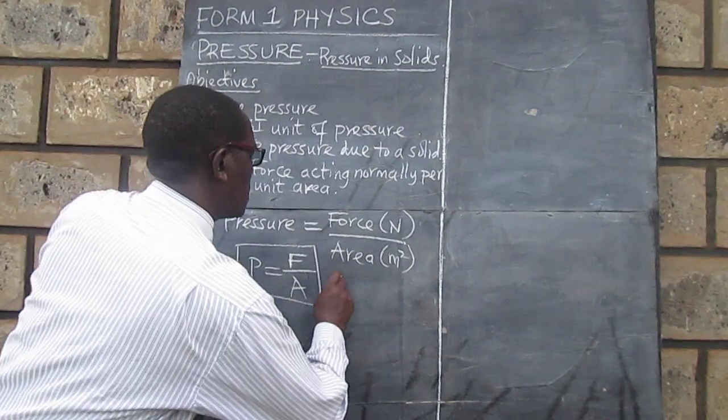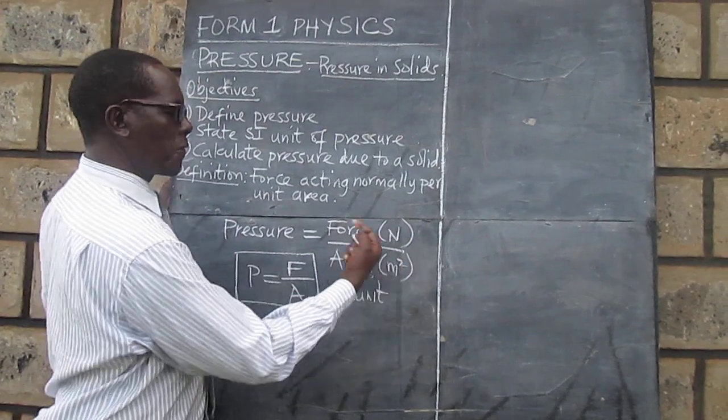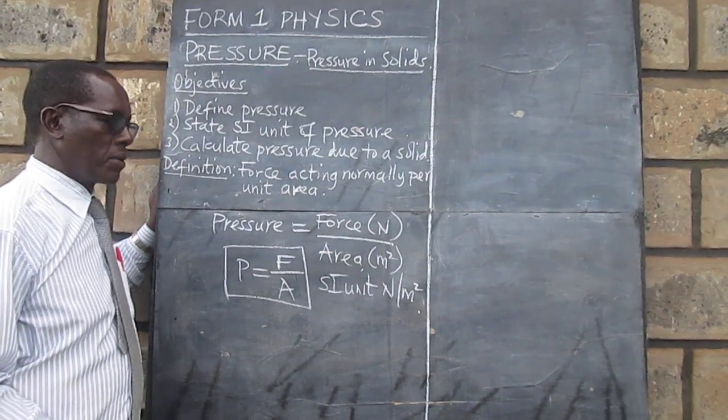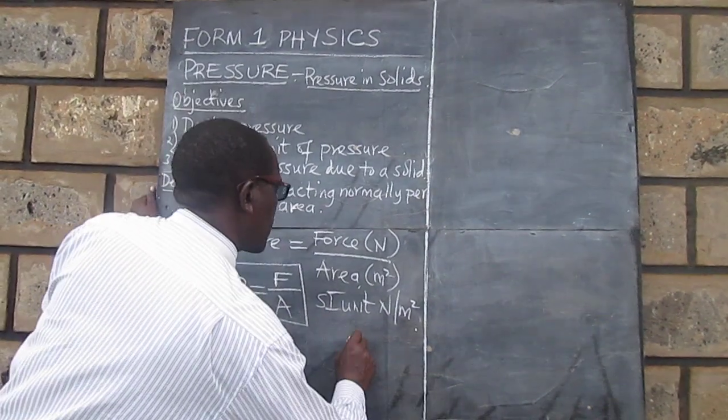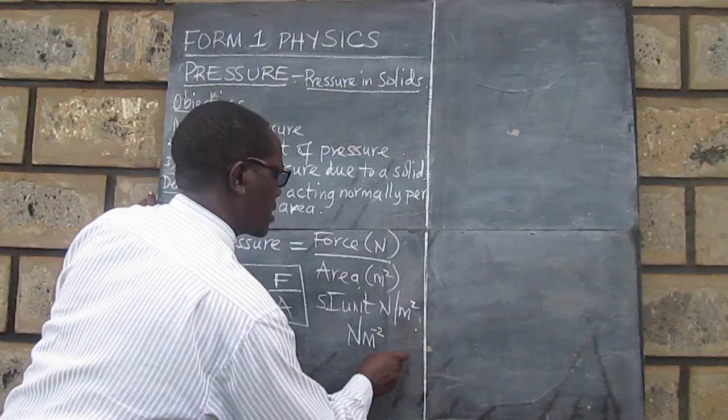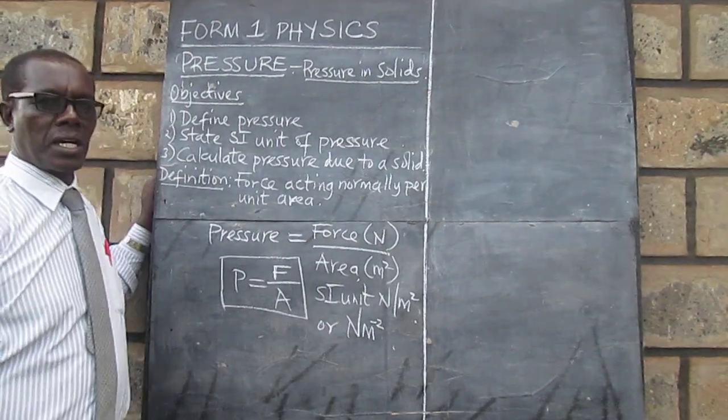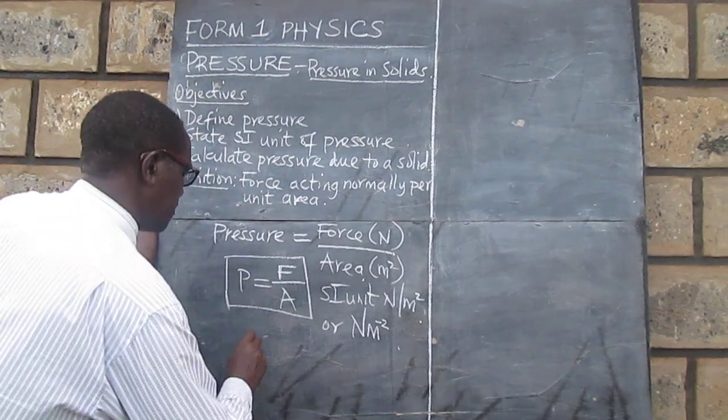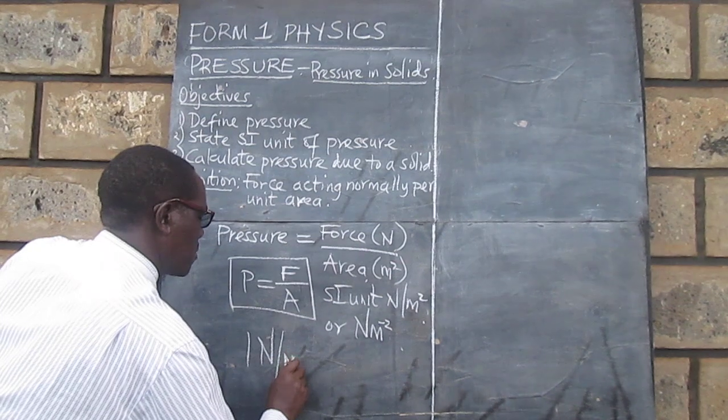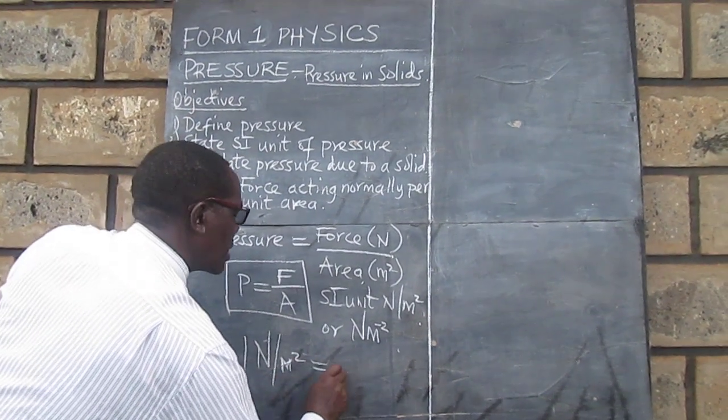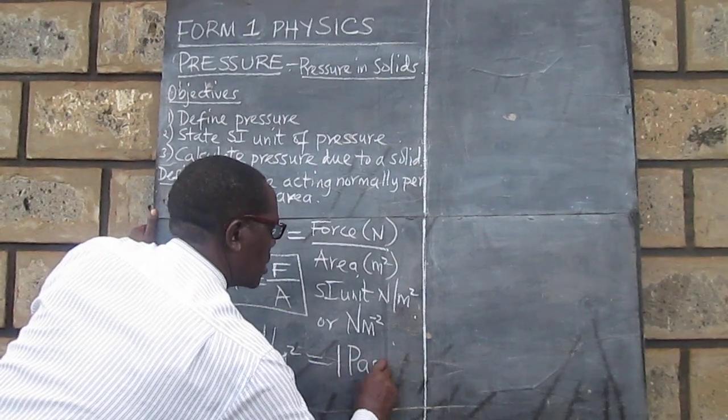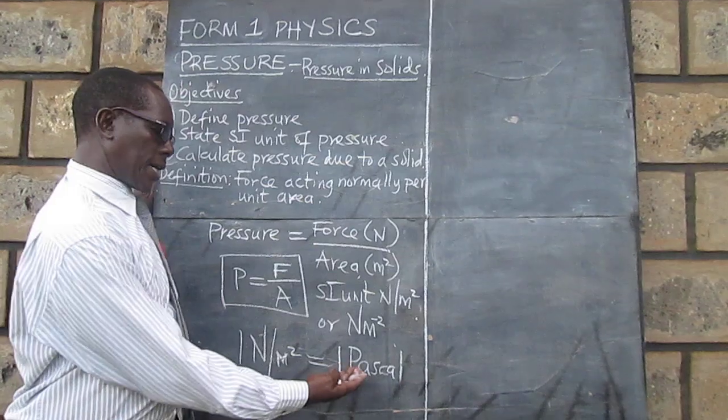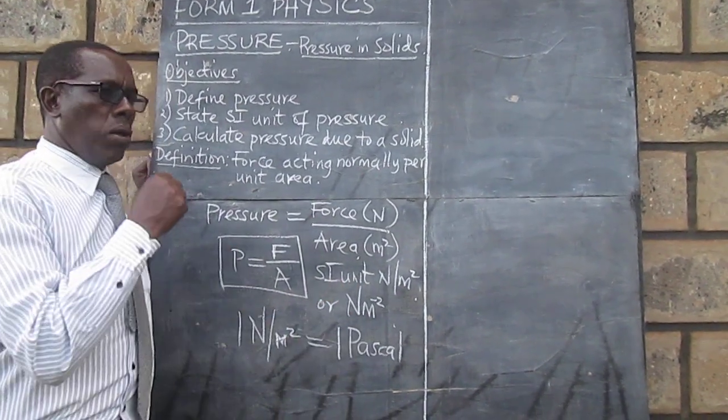The SI unit can be obtained from here. That is Newton per meter squared, which we can also write using the negative index as N m raised to the power of negative 2. But it is also good to remember that one Newton per meter squared is equivalent to one Pascal. So in working out a question we can give the final answer in Pascals or in Newtons per meter squared.